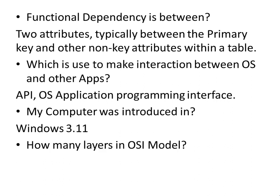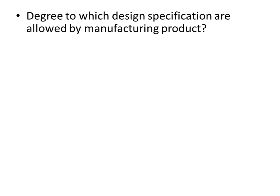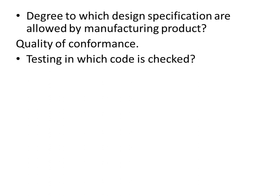How many layers does the OSI model have? 7 layers. Degree of which design specifications are allowed by manufacturing product? Quality of conformance. Testing in which code is checked — White Box Testing.